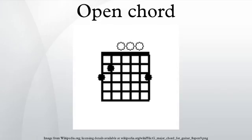In contrast, all of the strings are fingered for a bar chord. Guitarists use capos, which are devices that clamp down the strings to create a movable nut, to play open chords in different keys. With a capo on the first fret, an open A minor chord would sound like a B-flat minor chord.